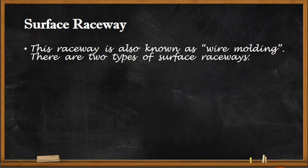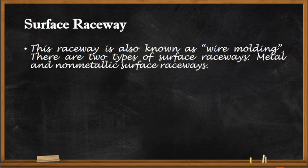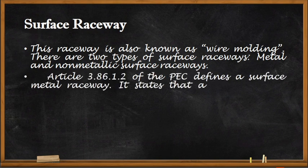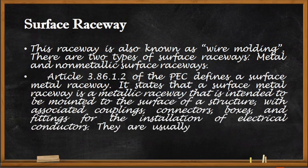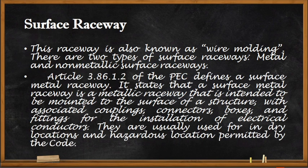Surface raceways are also known as wire molding. There are two types: metal and non-metallic surface raceways. Article 3.86.1 of the Philippine Electrical Code defines a surface metal raceway as a metallic raceway intended to be mounted to the surface of a structure, with associated couplings, connectors, boxes, and fittings for the installation of electrical conductors. They are usually used for dry locations and hazardous locations permitted by the code.